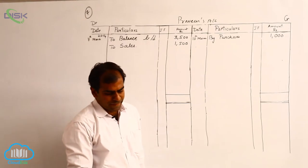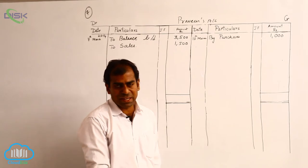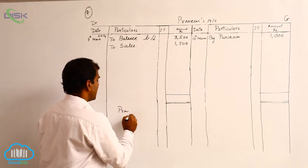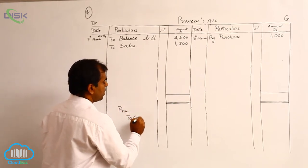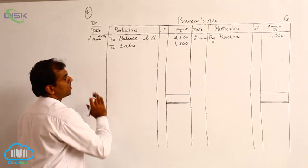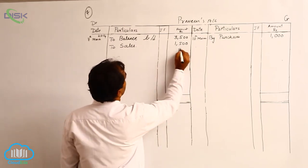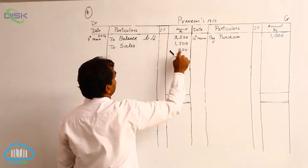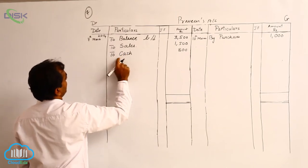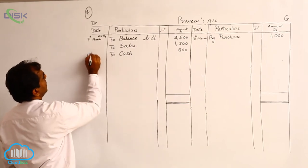Next, on 15th, paid cash to Praveen. The journal entry would be Praveen to cash. Based on this journal entry, we are debiting Praveen's account. So we enter the amount 800 on the debit side of Praveen's account. We are debiting Praveen's account with 800; what we are giving to Praveen is cash. The date recorded is 15th.